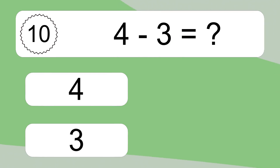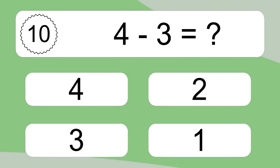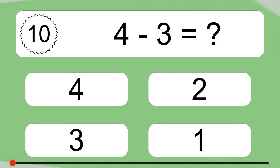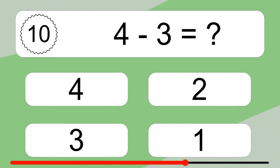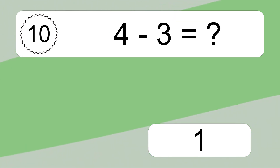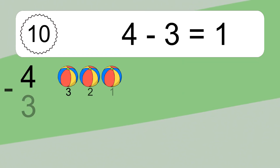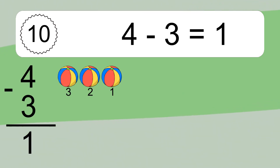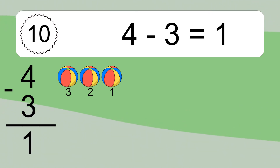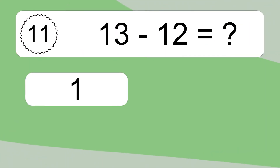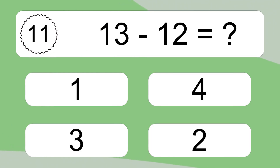4 minus 3 equals what? 4 minus 3 equals 1. Let's count it. 3, 2, 1.